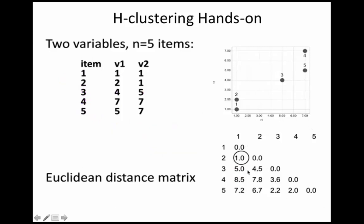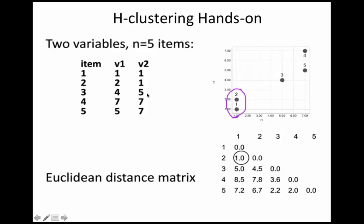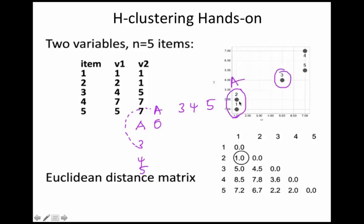In this matrix, the least distance means there is more similarity. The least value is 1, which is the distance between items 1 and 2. Since this is the minimum, we group items 1 and 2 and call it Cluster A. Now instead of items 1 and 2, we have Cluster A, and we need to calculate a new matrix with A, 3, 4, and 5.